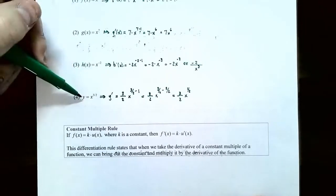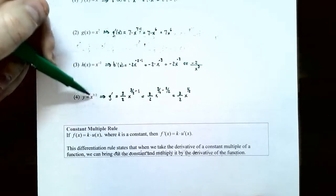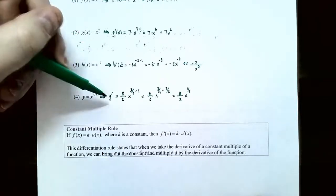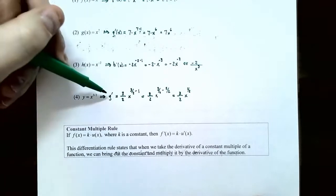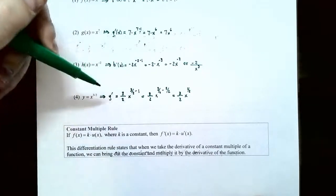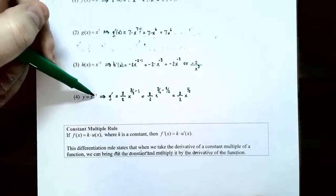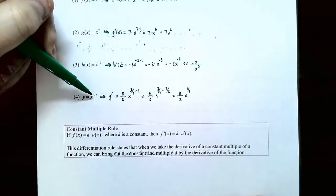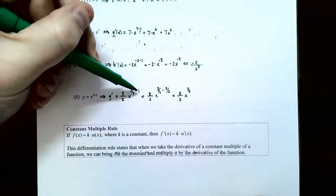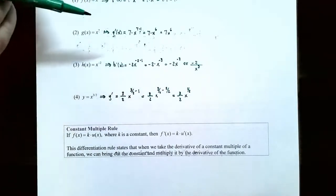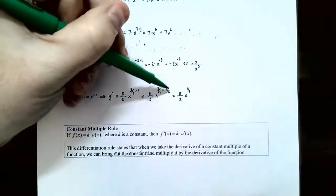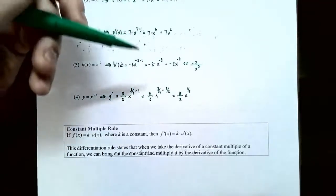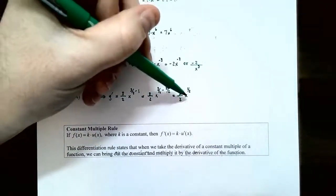Number four, y equals x to the 3 halves power. This time the exponent is a fraction, but it's still a power function. The derivative y prime, or dy dx using Leibniz notation, equals 3 halves times x to the 3 halves minus 1. To subtract, you need common denominators, so rewrite 1 as 2 divided by 2, giving 3 halves subtract 2 halves equals 1 half in the exponent. So the derivative y prime is 3 halves x to the 1 half power.